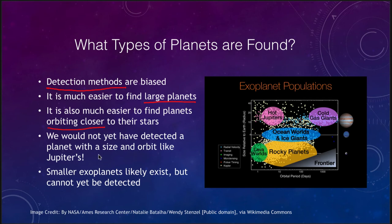So that's the example here that in just this little time we're looking, we would not have found a planet with an orbit and size like Jupiter. It's also likely that there are smaller planets that exist, but we just can't detect them yet. They don't tug on their stars enough. They don't block enough of the star's light to be able to be detected.